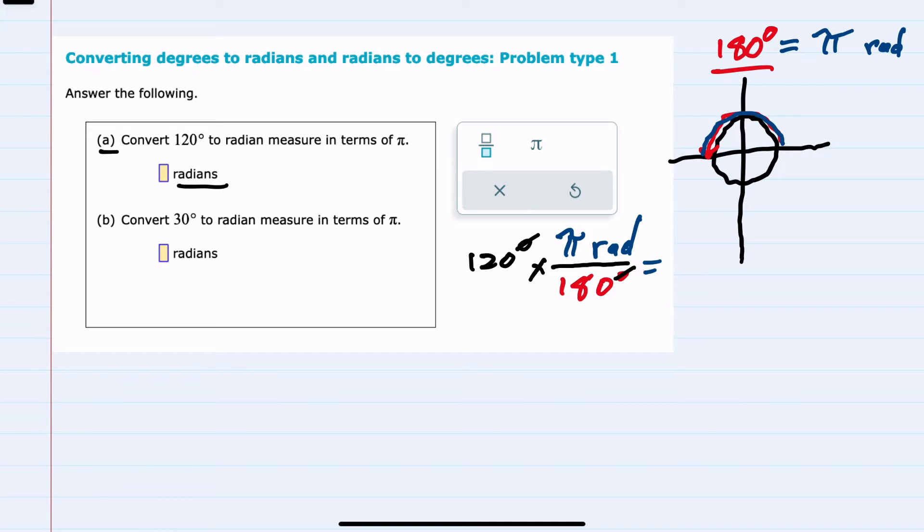And the 120 and 180 are both divisible by 60. So we can simplify, 60 goes into 120 twice and goes into 180 three times. So when we multiply, we get 2 pi in the numerator, and we still have the 3 in the denominator. Our units are now radians, so 2 thirds pi radians for part A.